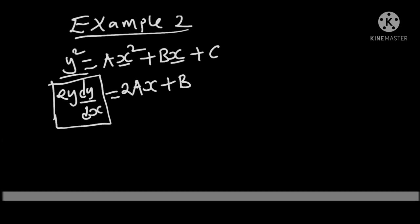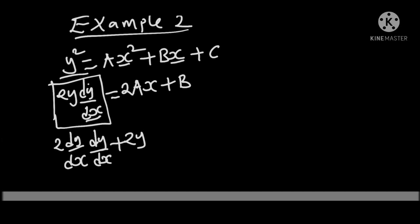To differentiate the left-hand side term again, we need to apply the product rule. Differentiating 2y while keeping dy over dx constant gives 2 dy over dx. Keeping 2y constant and differentiating dy over dx gives 2y times d squared y over dx squared, equals 2a on the right side. When we differentiate x, we get 1; 1 times 2a gives 2a. The derivative of the constant b is 0.